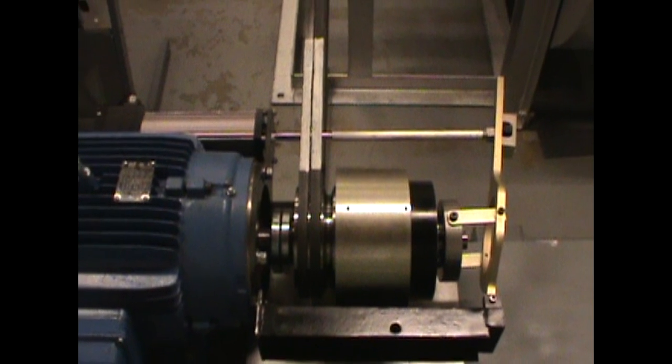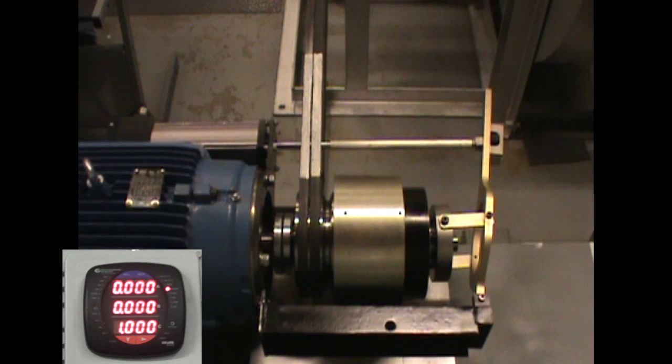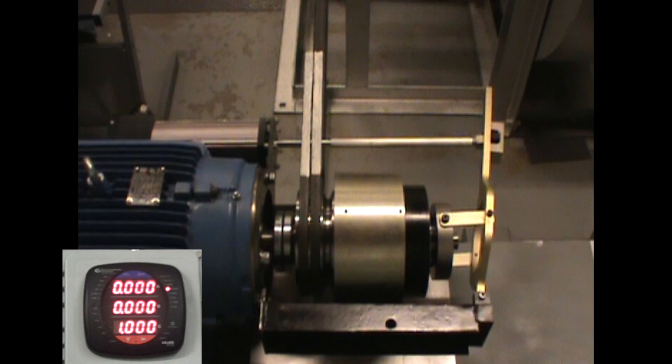Next will be a demonstration of the adjustable speed drive's soft start characteristics. The meter displayed in the lower left corner will measure the power used by the motor at startup with the ASD. The top number measures kilowatts, the middle number measures VARs, and the lower number is power factor. Note that at startup, the kilowatt value never exceeds the full load rated wattage for the motor.